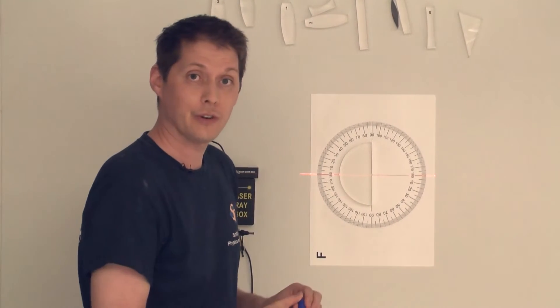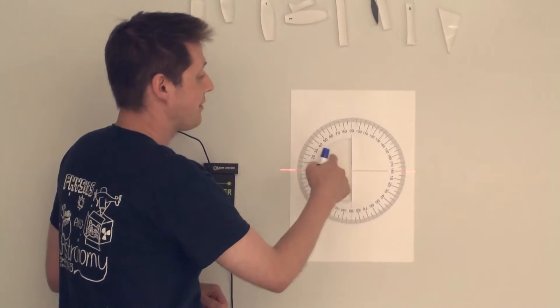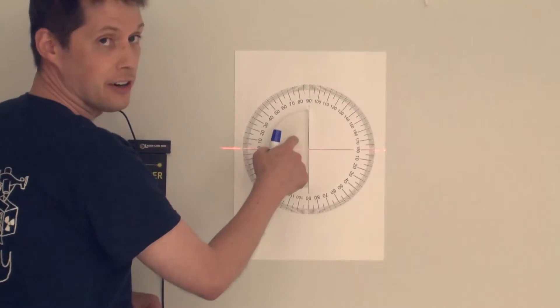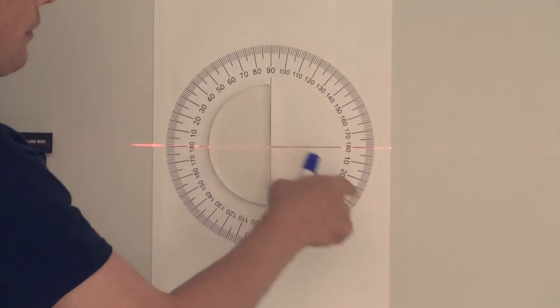Now there are a few terms that we need to use for Snell's Law. The first is the index of refraction, and we need it for both sides of the boundary. And then the angle at which the light enters, or hits the boundary, and the angle at which it refracts.